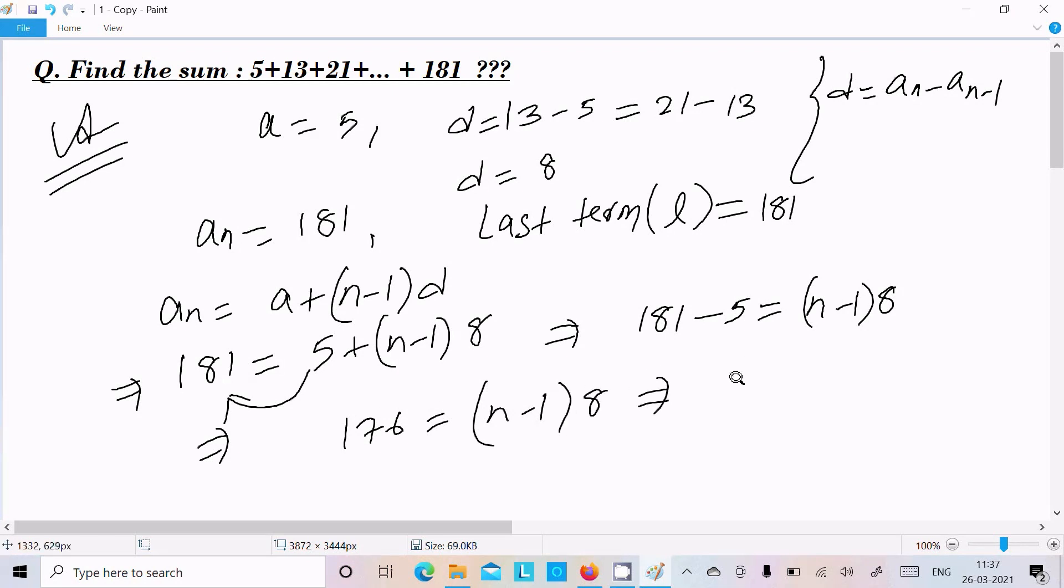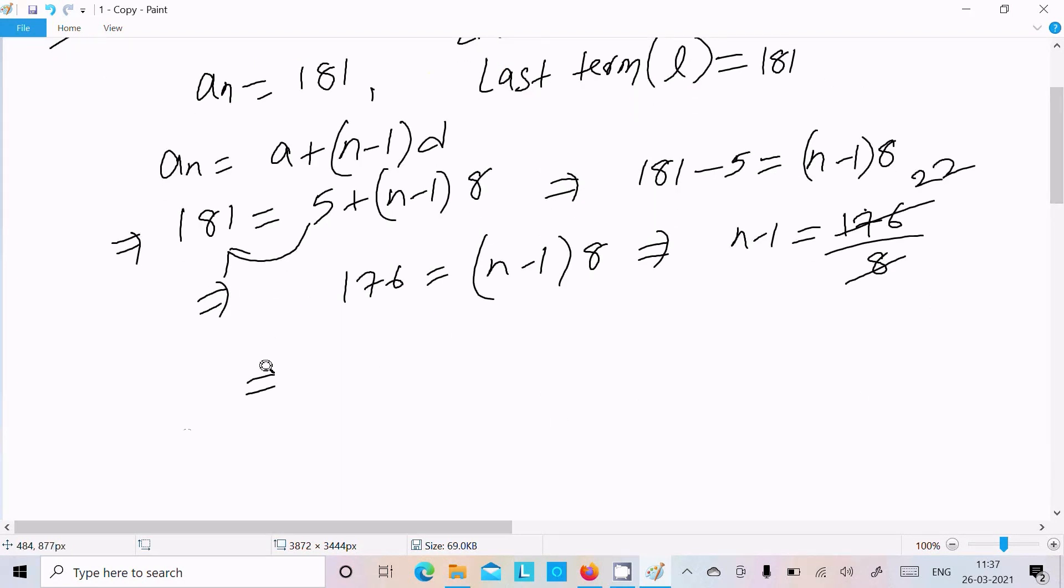Here after, we can write n minus 1 equals 176 divided by 8. So here it cancels, so 8 into 2 is 16, here 1, this cancels on 22 times. So now n minus 1 equals 22, or we can write n equals 22 plus 1, n equals 23.